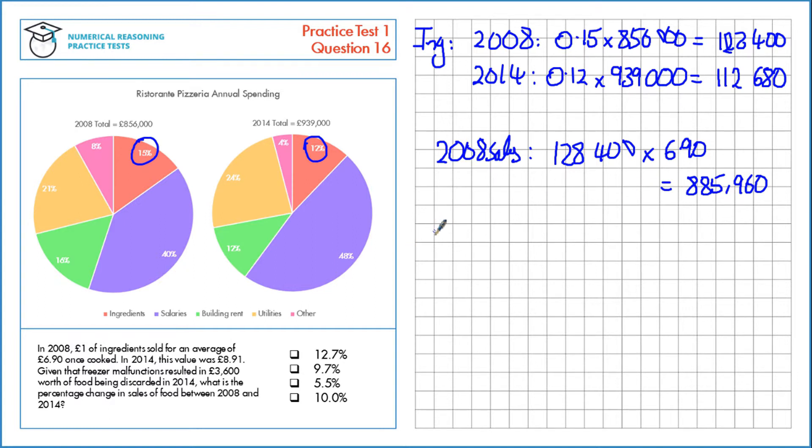Let's have a look at the usable food in 2014. So we start with £112,680 worth of food. We have to subtract £3,600 due to the malfunctions. That leaves us with £109,080.